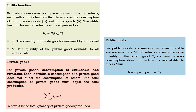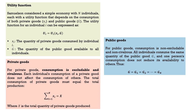The total consumption of private goods must equal total production: the summation of xi for i equals 1 to n equals capital X, the total quantity of private goods produced. For public goods, since consumption is non-excludable and non-rivalrous, if all individuals are consuming the same quantity of public good G and one person's consumption does not reduce its availability to others, then G equals G1 equals G2 equals Gn — all individuals within the economy share in the public good G.